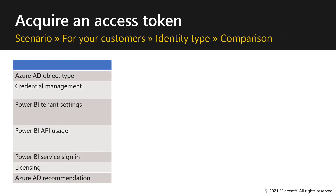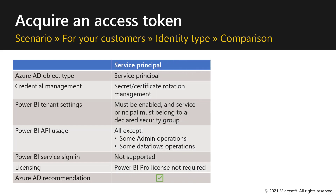Let's now compare the capabilities of both identity types. For the Service Principal, the Azure AD object type will be a Service Principal. Credentials are managed in a secret or certificate rotation management. Power BI tenant settings must be enabled and the Service Principal must belong to a declared security group. You can use all APIs except some admin and data flows operations. It's not possible to sign into the Power BI service with a Service Principal, and a Power BI Pro license is not required. This is the Azure AD recommendation.